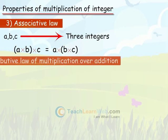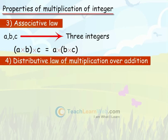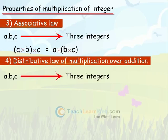Distributive Law of Multiplication over Addition: For any three integers a, b and c, we have a into (b plus c) equals a into b plus a into c.